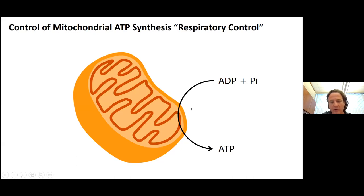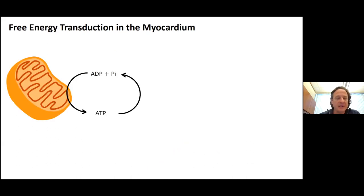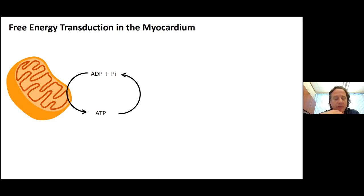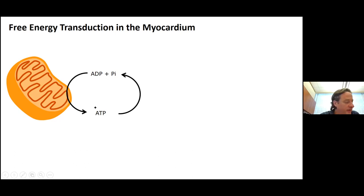This is going to be the story about how mitochondria make ATP. They don't make ATP out of thin air — mitochondria make ATP from the products of ATP hydrolysis. In the heart, which is the organ we care about most, the majority of ATP hydrolysis is done by myosin ATPase, generating mechanical work.